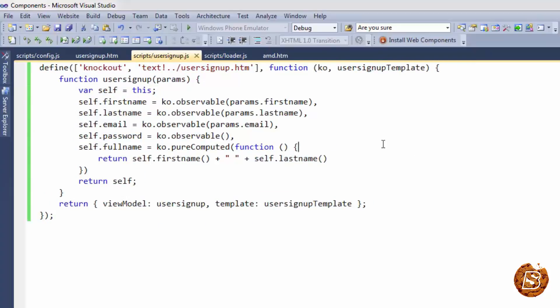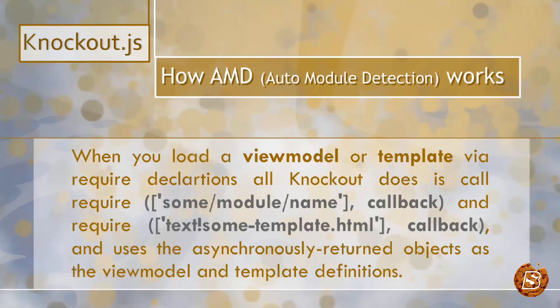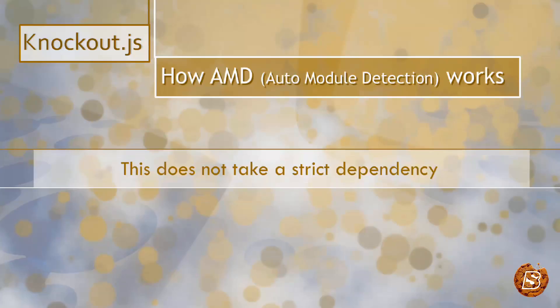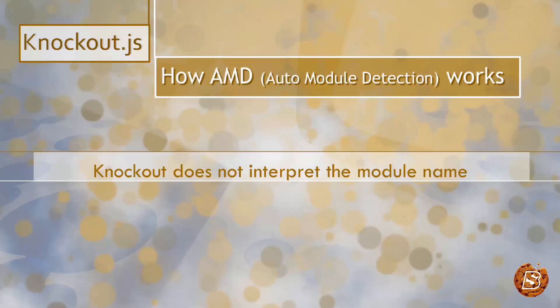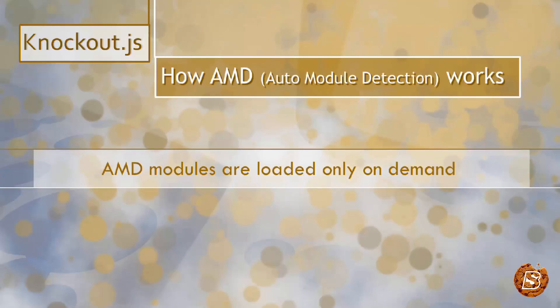Whenever we load a view model or template via a require declaration, all Knockout does is call the particular module name or template file along with a callback function, and uses the asynchronously returned objects as the view model and template definitions. This does not take a strict dependency on require.js — other loaders can be used as well. Knockout does not interpret the module name in any way; it merely passes it through to require. Knockout also does not care whether AMD modules are anonymous or not, and AMD modules are loaded only on demand — Knockout does not call require until your component is being instantiated. This is how components get loaded on demand, not upfront.